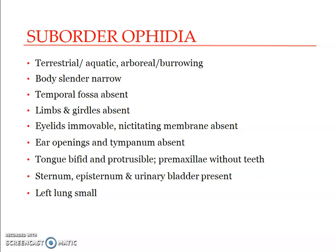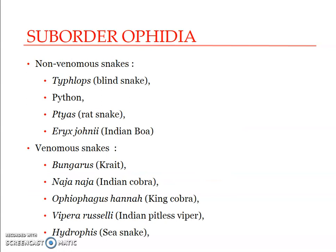The maxillae, palatines, and pterygoids are freely movable, which allows snakes to widen their mouth to swallow prey as a whole — they can swallow large animals like calves and bulls without damaging the skull, because these bones can be stretched to the maximum extent. The premaxillae are toothless, and the left lung is small. Ophidia includes both non-venomous and venomous snakes.